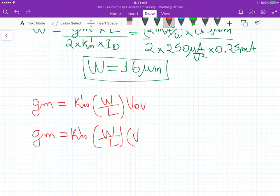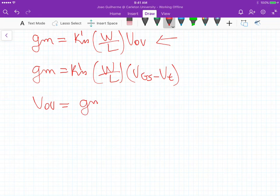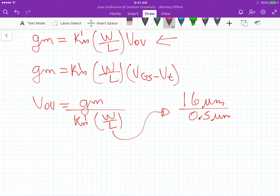in this case. So it's VGS minus VT. If we isolate V overdrive, we get that V overdrive equals gm divided by the process transconductance times the aspect ratio, and this one here is 16 micrometers divided by the length of 0.5 micrometers